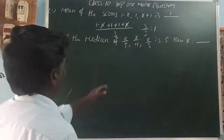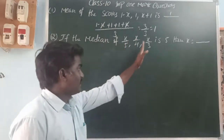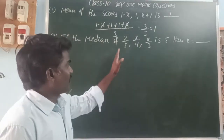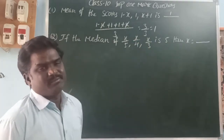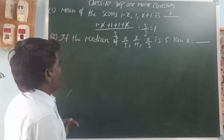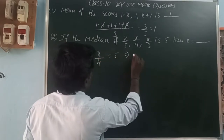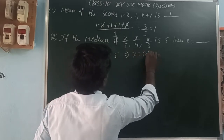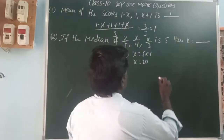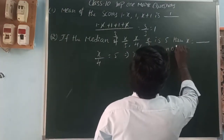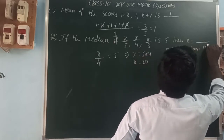If the median of x/5, x/4, x/3 is 5, then find x. The data is arranged in ascending order. The median is given as 5. There are two formulas: if the number of observations n is odd, the median is the value at position n plus 1 by 2.